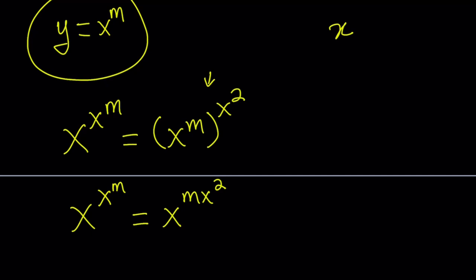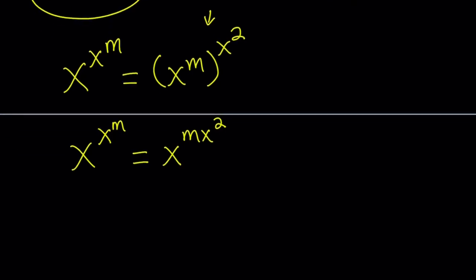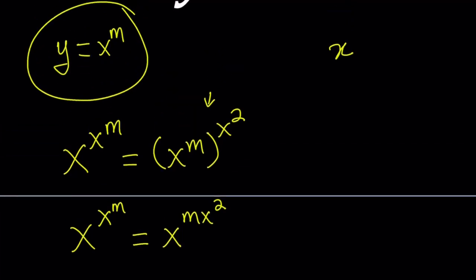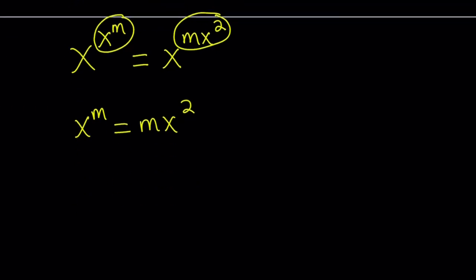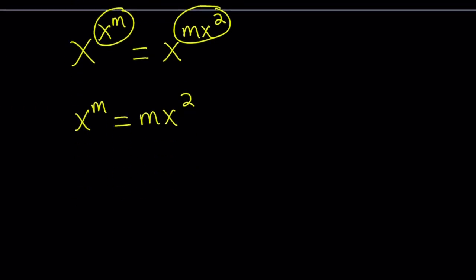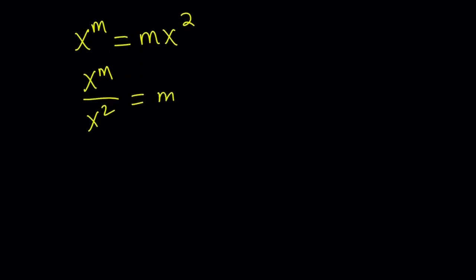Now we have the trivial cases — for example, can x be one? Can x be negative one? We're going to look at those cases later on and solve without them first. Suppose x does not equal one or negative one. In this case we compare the exponents, so x to the power m equals m times x squared. Divide both sides by x squared to get x to the power m minus two equals m.